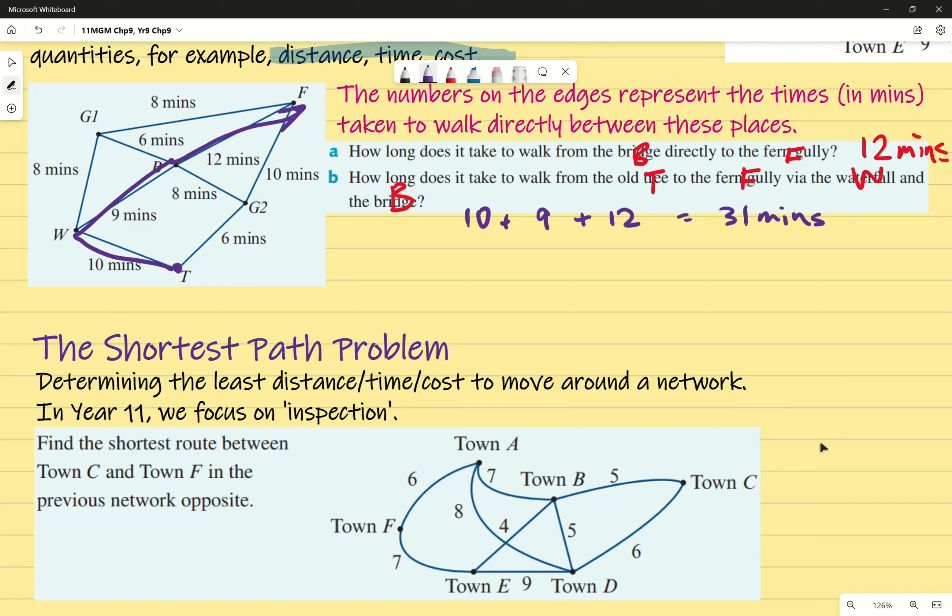This question says, find the shortest route between town C and town F in the previous network opposite. Please note that the weight associated with the graph's edge does not necessarily correlate to the length of that edge. I'm going to say that one more time. The weight of the edge does not necessarily correlate to the length of that edge. So for example, this line here is a different length to this line there, but they're still both being assigned 5. So don't misunderstand it as it's longer, therefore it's going to have a higher number.